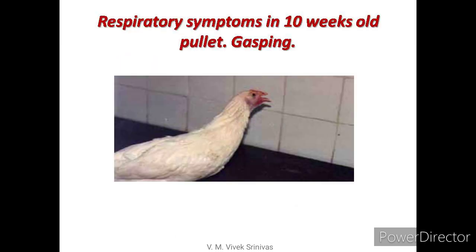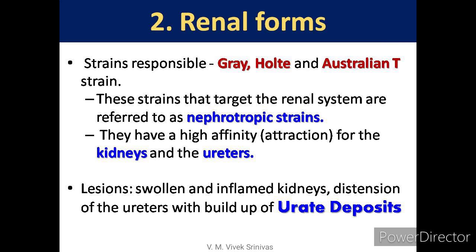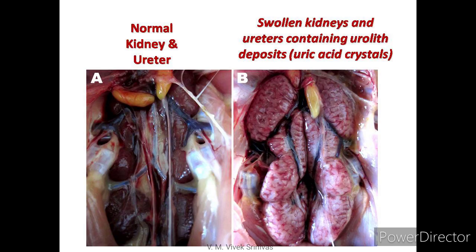The picture depicts the gasping respiratory symptom in a 10-week-old pullet. In the renal form, Gray, Holt, and Australian T strains are responsible. These strains target the renal system and are referred to as nephrotropic strains, with high affinity for the kidneys and ureters. On post-mortem, swollen and inflamed kidneys and distention of the ureters with buildup of urate deposits are observed. The picture at right depicts swollen kidneys and ureters containing urolith deposits, that is uric acid crystals.